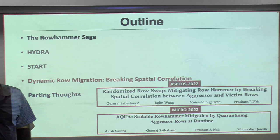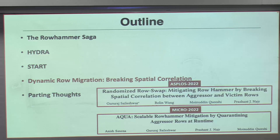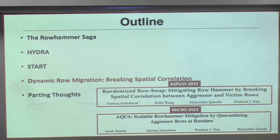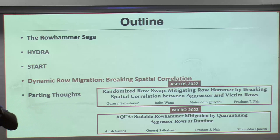Now let's move to the mitigating action. I mentioned that attackers are now using the mitigating action itself to cause more failures — so we can't just use victim refresh. The basic problem is: if something gets attacked a lot and you refresh victim rows but do nothing to the aggressor, the aggressor and victim remain nearby. The aggressor is still free to keep attacking victims. You're maintaining the spatial proximity between aggressor and victim. What do we do? Move them somewhere else.